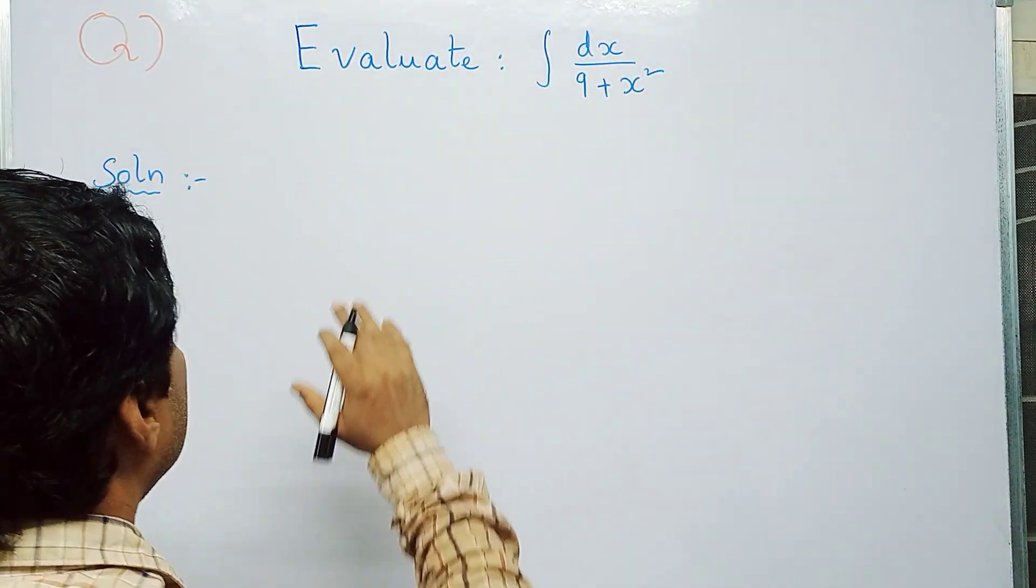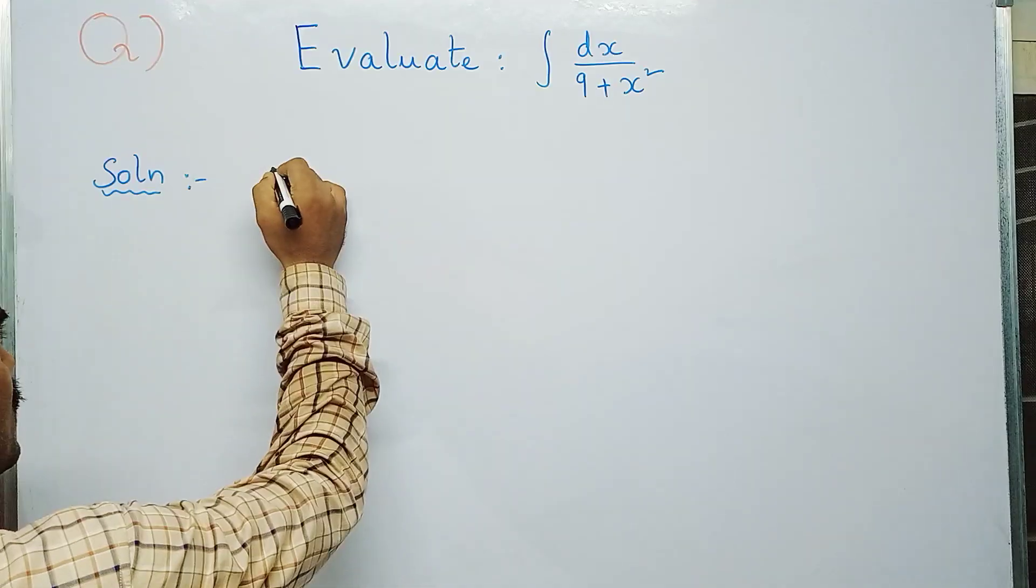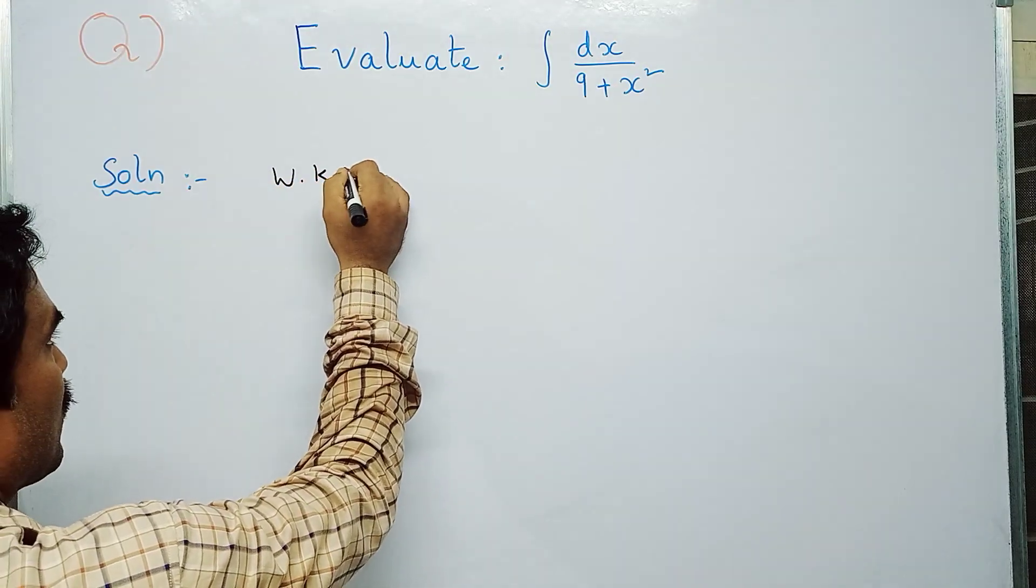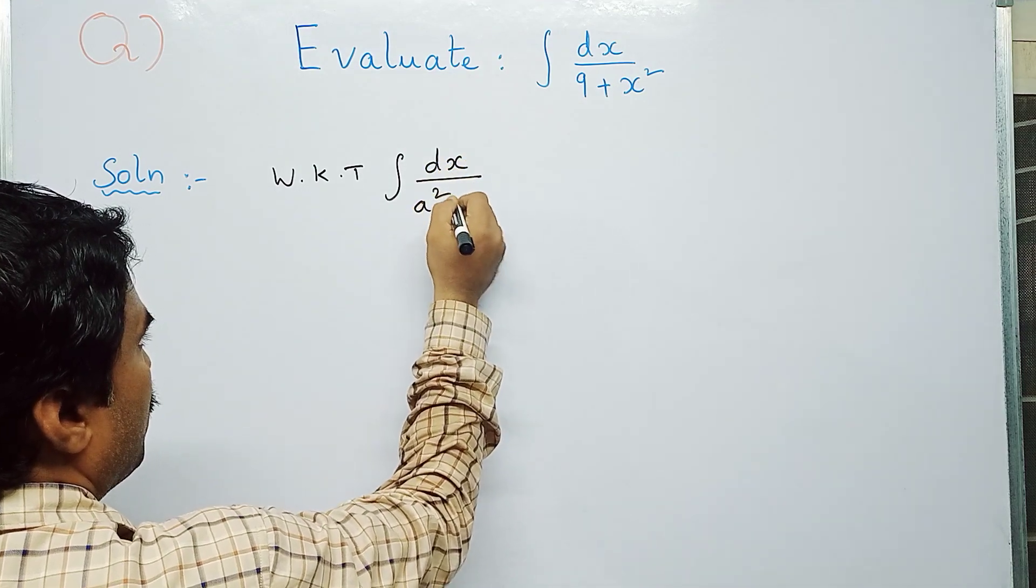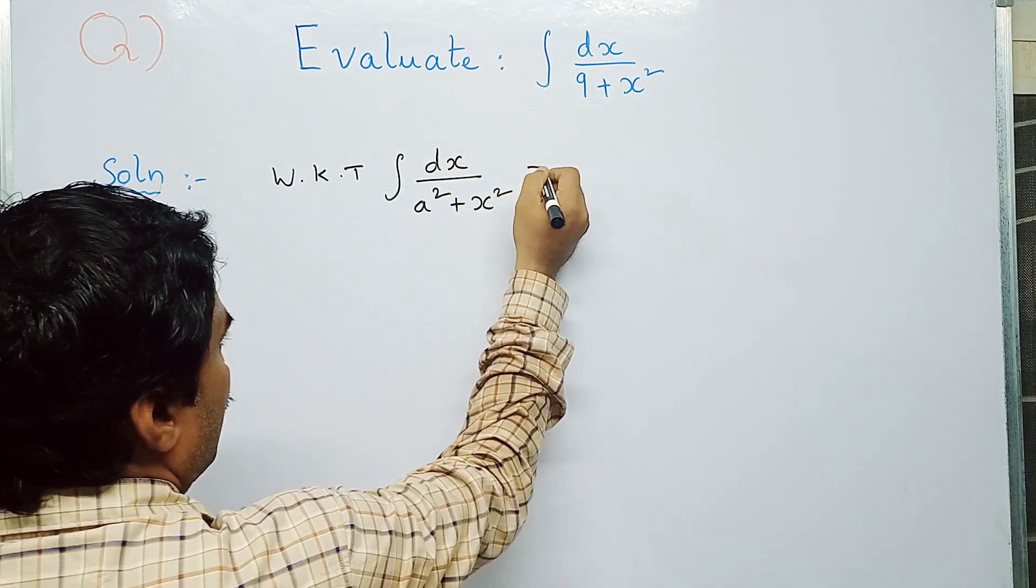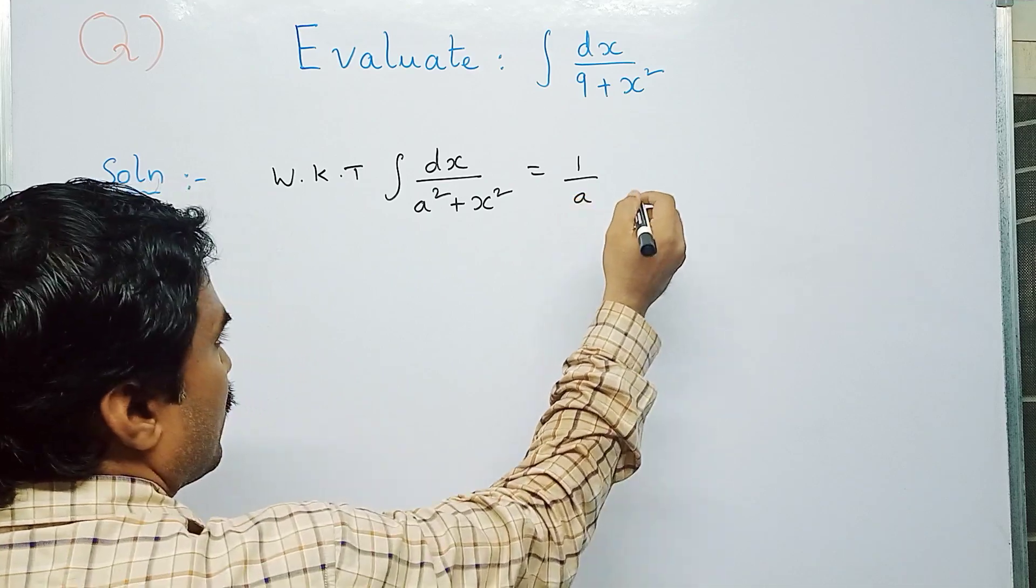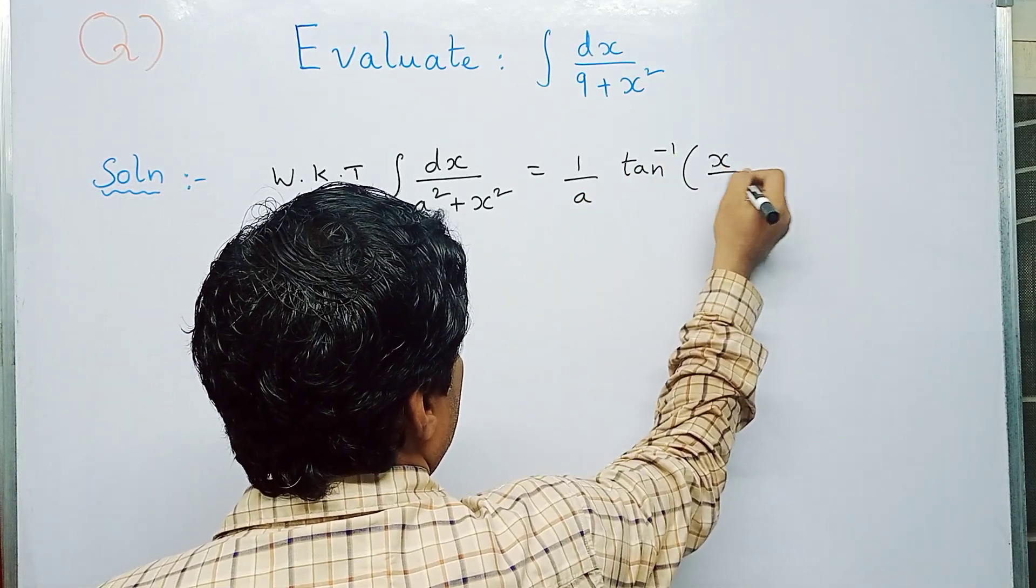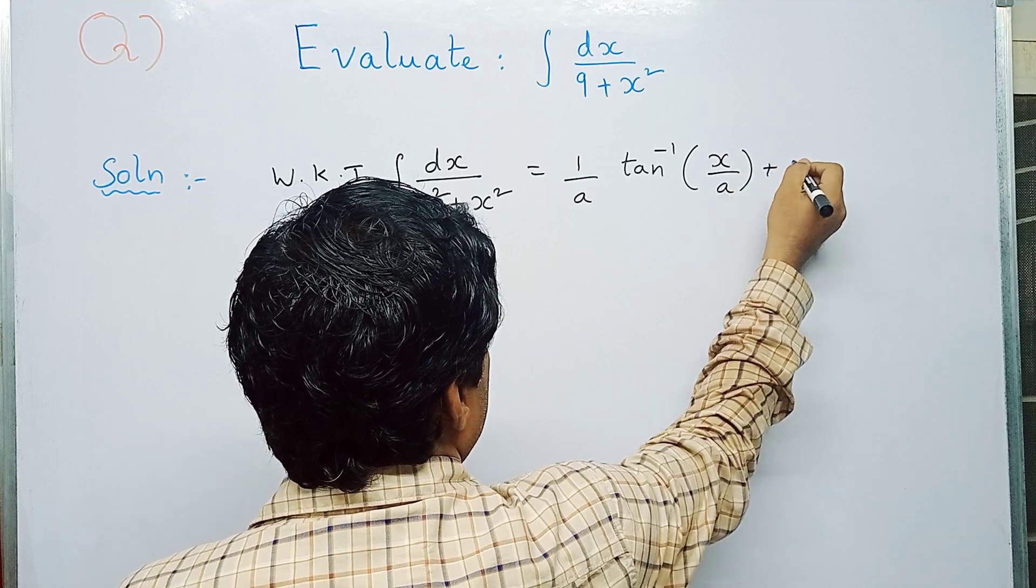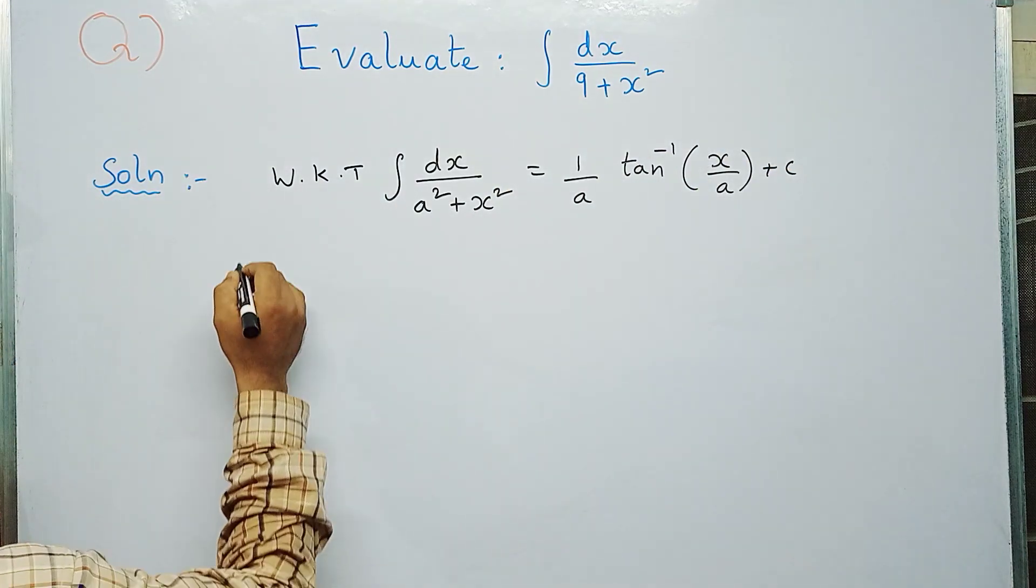First, as I told you before, write the formula first. We know that integral dx by a squared plus x squared equals 1 by a tan inverse x by a plus c.